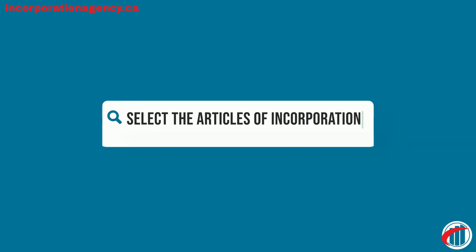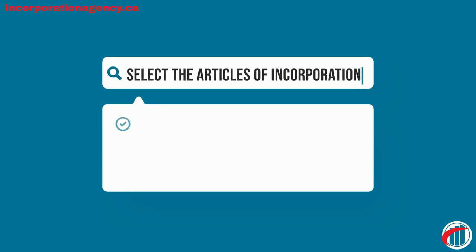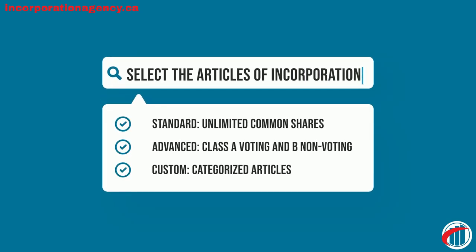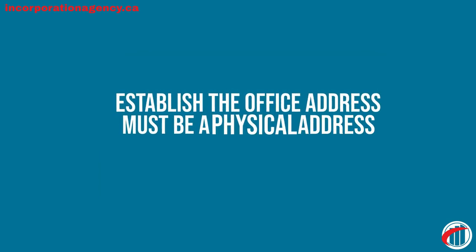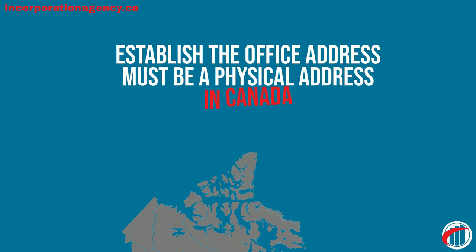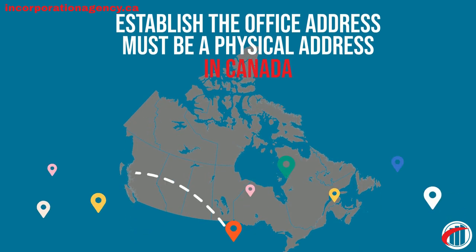Select the articles of incorporation — it can be a standard, advanced, or custom version. Next, establish the office address, which must be a physical address in Canada.